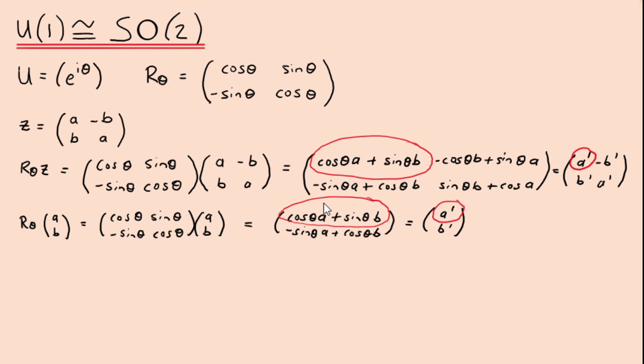That demonstrates that U1 is isomorphic to SO2. You can also see that U1 and R_theta are both parameterized only by theta, and they're both some kind of rotation operation. So they are in fact isomorphic. In the next video, we'll be moving on to a new topic, which I think you will find very interesting.